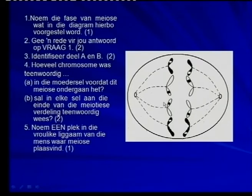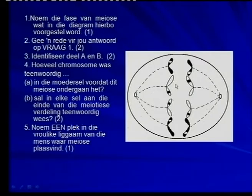A and B: this was a question where they wanted to know the cell membrane - remember, not the nuclear membrane - and the spindle thread. Now if we had one, two, three, four chromosomes here, how many did we have in meiosis one? That's very important.